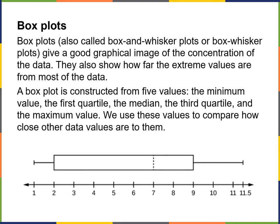Box plots — also called box and whisker plots — give us a graphical image of the concentration of data. Whatever the value is, the little box shows you where most of the data is concentrated. A box plot is constructed from five values: the minimum value, the first quartile, the median, the third quartile, and the maximum value. We use these values to compare how close other data values are to them — it's just another graphical way to quickly look at where most of the data is.